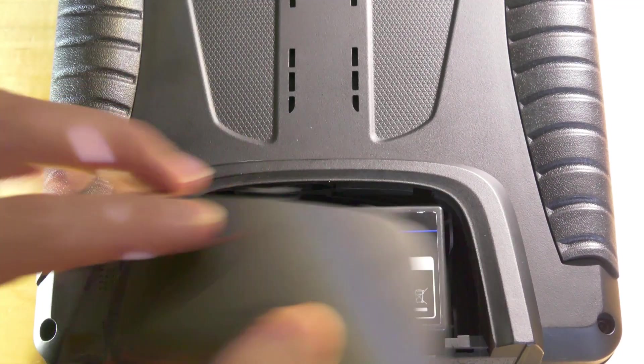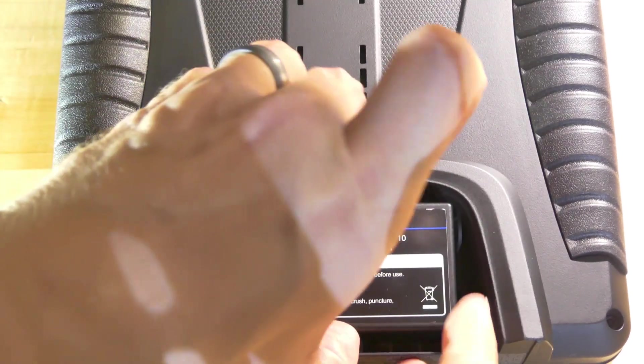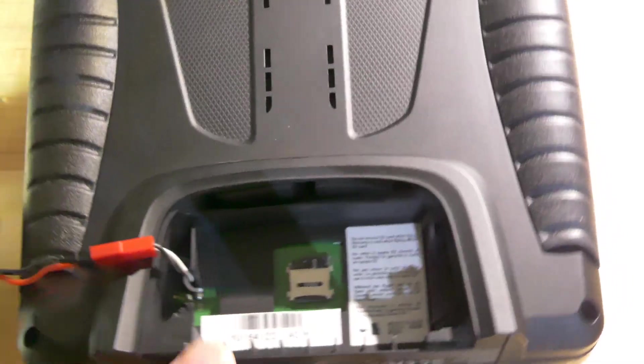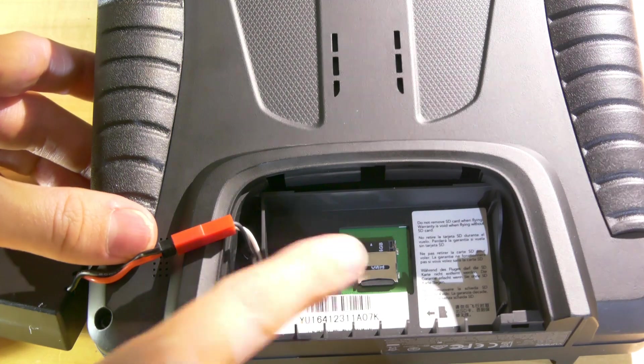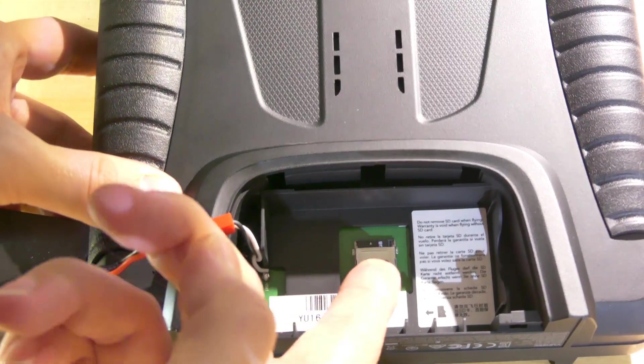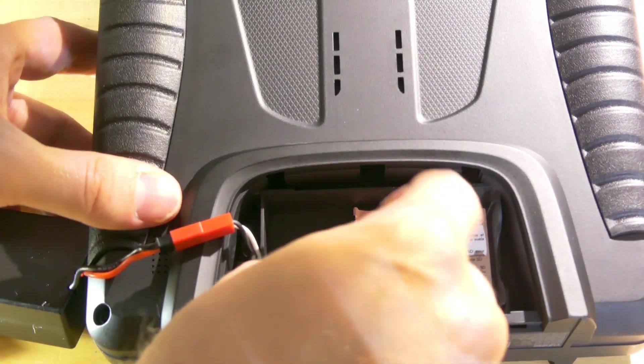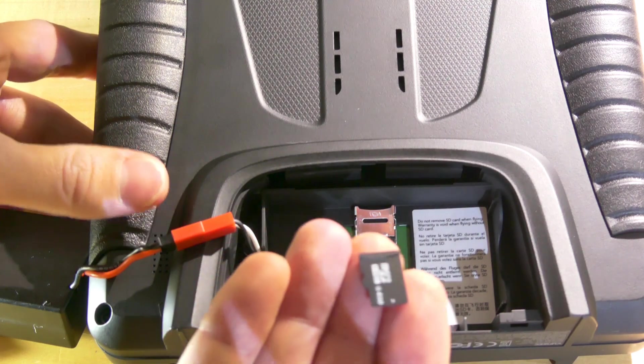Now that we have some good data, all we have to do now is retrieve it. To do that, open up the back of your controller, remove the battery, and there's a little SD card here that you can get.